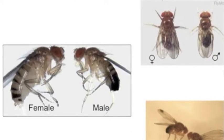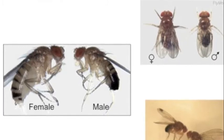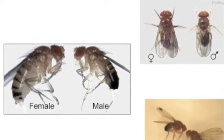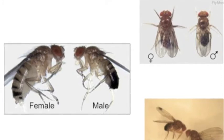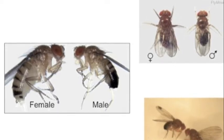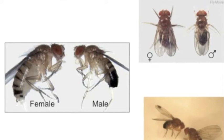One thing you will have to learn in this practical is how to recognize a male from a female. As you can see in the pictures, females tend to be larger, but not necessarily so as it depends on age. The main difference is the coloring. The male, on the right, has a darker back, while the female has a more striped back and a more rounded body.